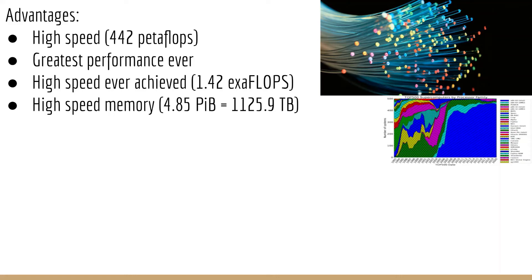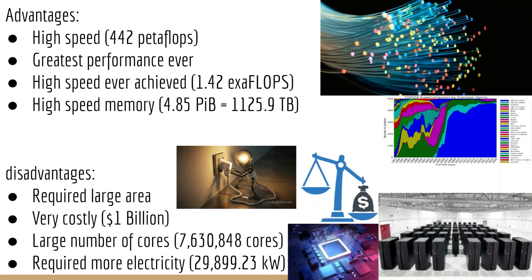There are also disadvantages of Fugaku, which include a large area required to keep it safe from outside damage, a price tag of $1 billion for the total project cost, a large number of cores — as many as 7.6 million cores — and since it's a supercomputer, it requires almost 30,000 kilowatts of electricity per process.